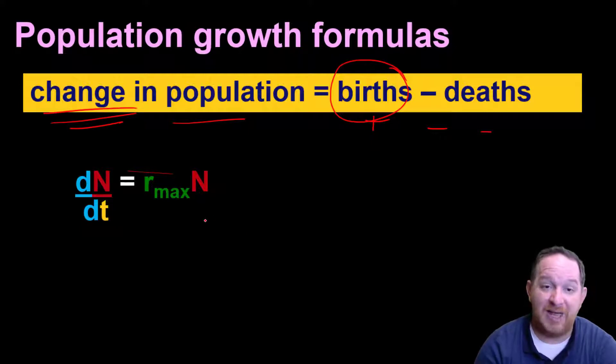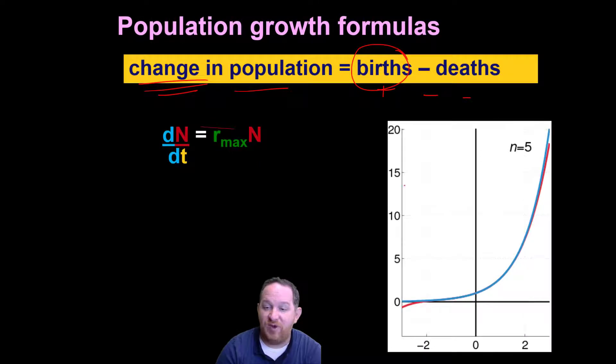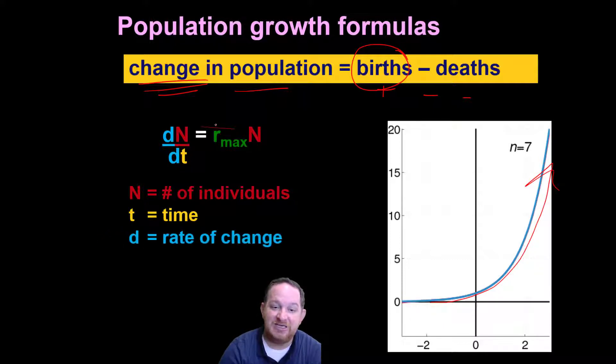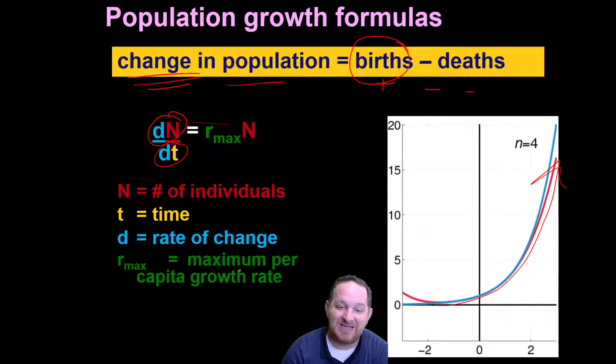We're going to start with more of an exponential or a general growth formula. If you think about it, a change in a population is really just the births that add to the population minus the deaths that take away from a population. Here's a very general formula for calculating population change. In this formula, dn over dt equals r max times n. N is the number of individuals in a population. T is time. D is the rate of change. So the rate of change or the change in the number over the change in time is equal to r max, which is the maximum per capita growth rate, times the number of individuals.